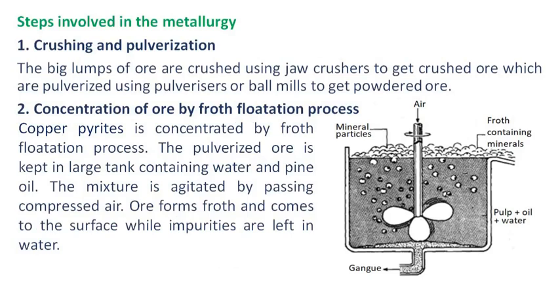Steps involved in the metallurgy. Crushing and pulverization: The big lumps of ore are crushed using jaw crushers to get crushed ore, which are then pulverized using pulverizers or ball mills to get powdered ore.